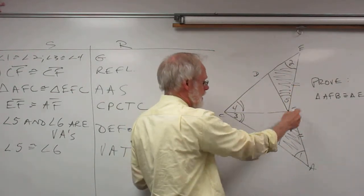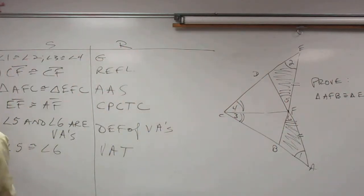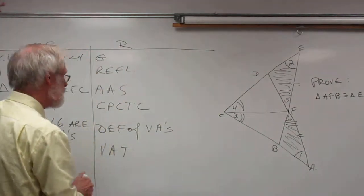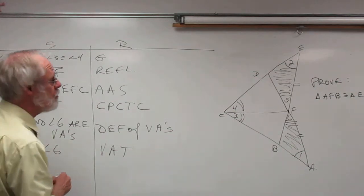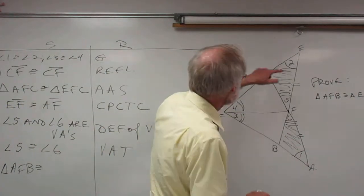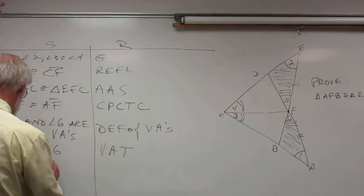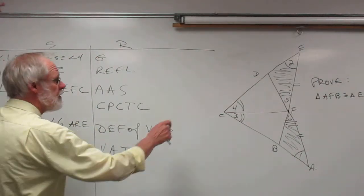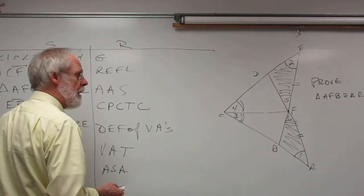Now we have angle-side-angle to angle-side-angle, and we can complete the proof. Step seven: triangle AFB is congruent to triangle EFD — which is what we wanted — and the reason is angle-side-angle (ASA).